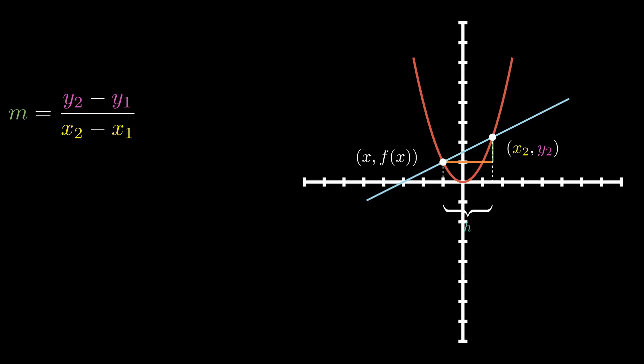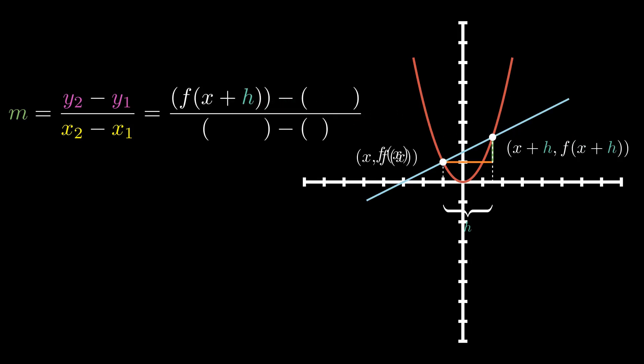So these points are h away from each other. Now for our second point, since our second point is h away from our first point, instead of x2, we're going to label that as x plus h. And then instead of y2, we're going to say that's f of x plus h. So now we've done a little substitution of our first and second points. Now what we're going to do is plug it into our slope formula: for our y2 we plug in f of x plus h, for y1 we plug in f of x, for x2 we plug in x plus h, and for x1 we plug in x. So when that's all plugged in, we get f of x plus h minus f of x, all over x plus h minus x.